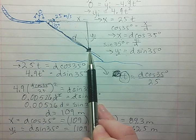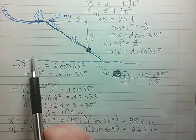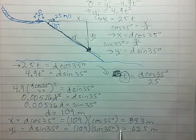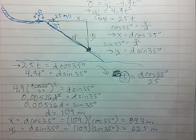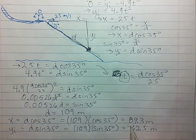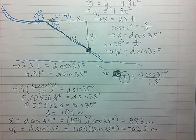He has gone 89.3 meters in the x direction and down 62.5 meters in the y direction. So we should put a negative here to show that it's down.